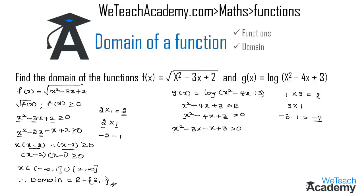Taking x as a common factor from the first two terms gives x(x - 3), and taking minus 1 as a common factor gives minus 1(x - 3), so the expression becomes x(x - 3) - 1(x - 3) > 0. Taking (x - 3) as a common factor, we can write this as (x - 3)(x - 1) > 0.